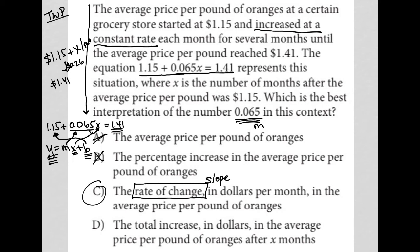Choice D, just to make sure, the total increase in dollars in the average price per pound of oranges after X months. No, this is a per month change. So it's not the total increase. It's just how much you increase each month. So C is the best answer to this question.